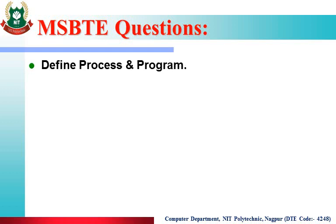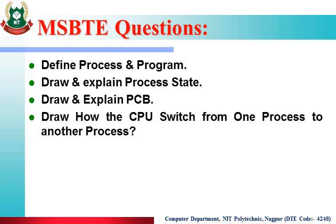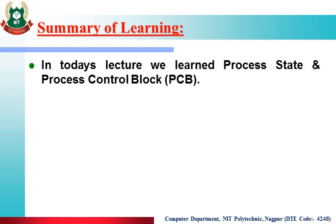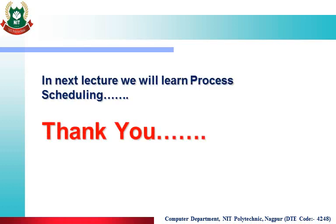These are some important MSBD questions: Define process and program. Draw and explain the process state. Draw and explain the PCB. Draw how the CPU switches from one process to another process — that is, explain context switching. Summary of learning: In today's lecture we learned about process state and the process control block — the different states of a process and the process control block. In the next lecture, we will learn process scheduling. Thank you.